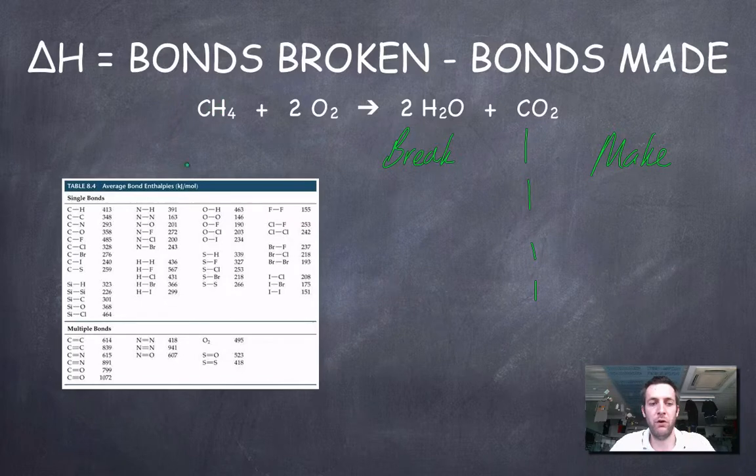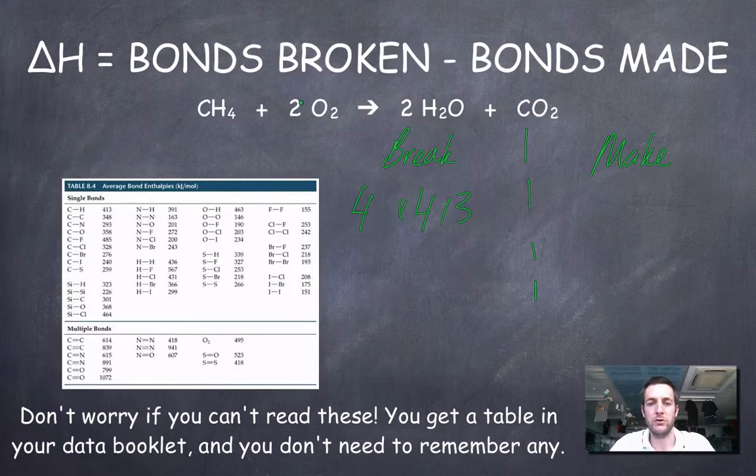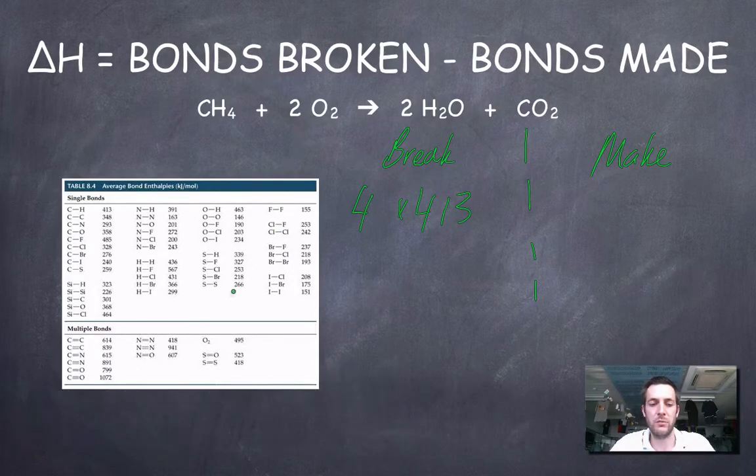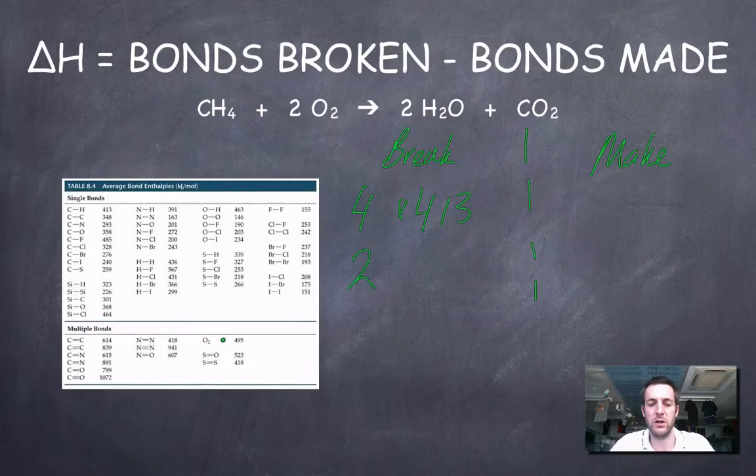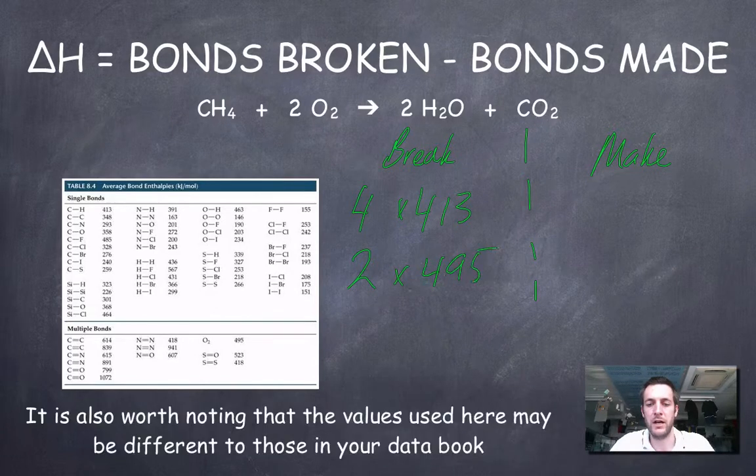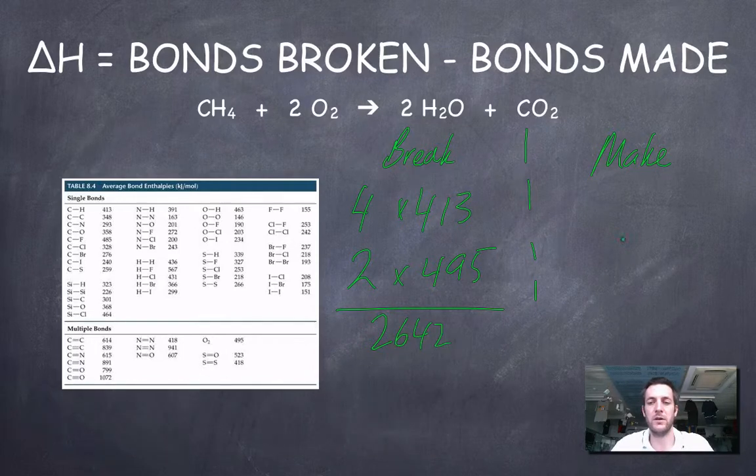We've got four carbon hydrogen bonds here. So, four times 413. We've got two oxygen oxygen double bonds. These are not oxygen oxygen single bonds. So, if we use that one, we'd be wrong. We need two times 495. If I add that lot up, hopefully I've done it right, I get 2642.